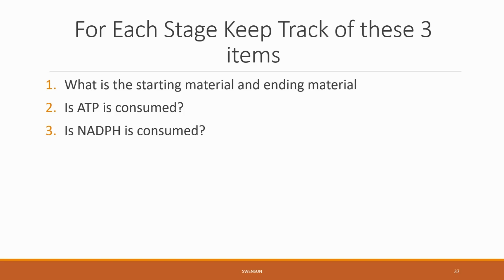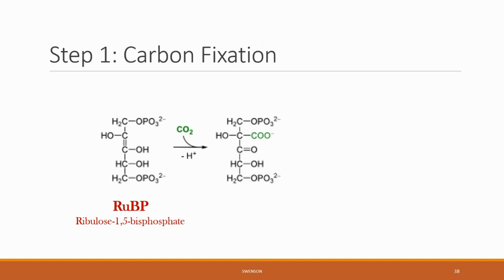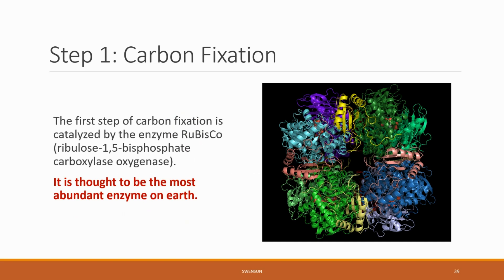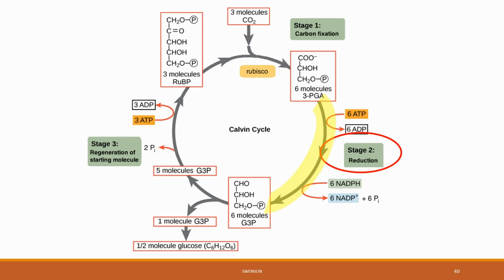In stage one, step one: ribulose-1,5-bisphosphate (RuBP) is readily available in the stroma. CO2 attaches to RuBP, then water and a proton are used to split this six-carbon molecule into two three-carbon molecules called three-phosphoglycerate. So far no energy inputs have been required. The first step of carbon fixation is catalyzed by the enzyme rubisco, which stands for ribulose-1,5-bisphosphate carboxylase oxygenase.